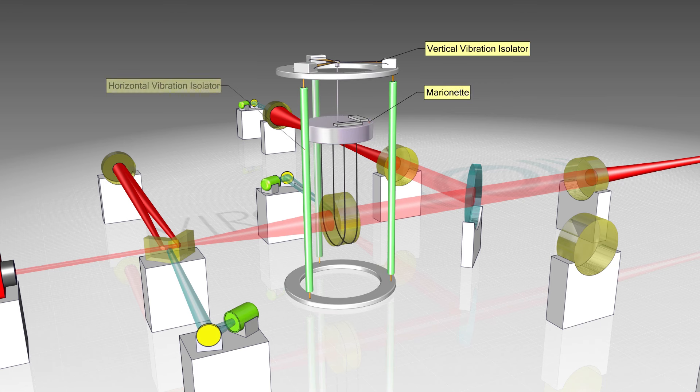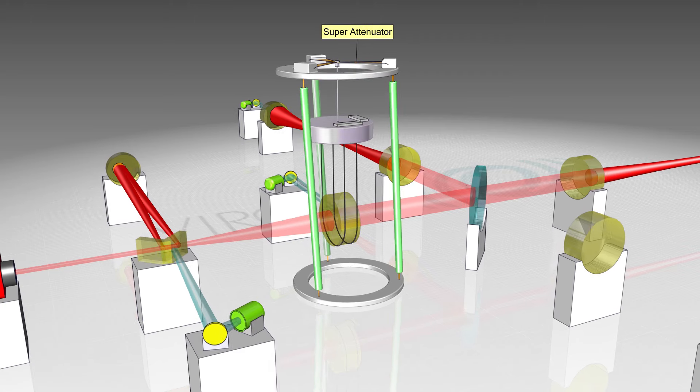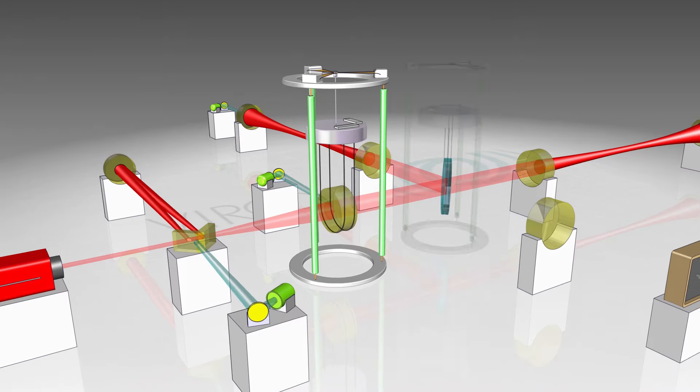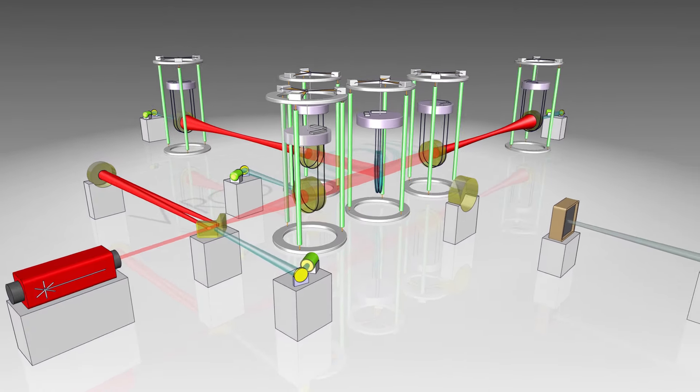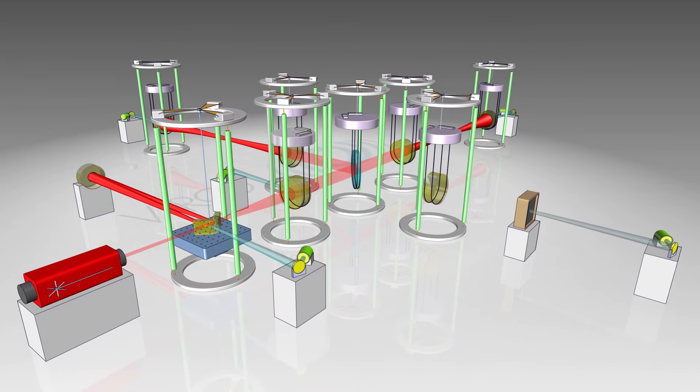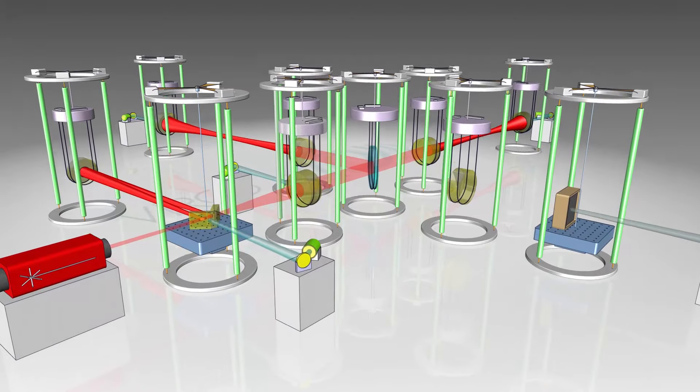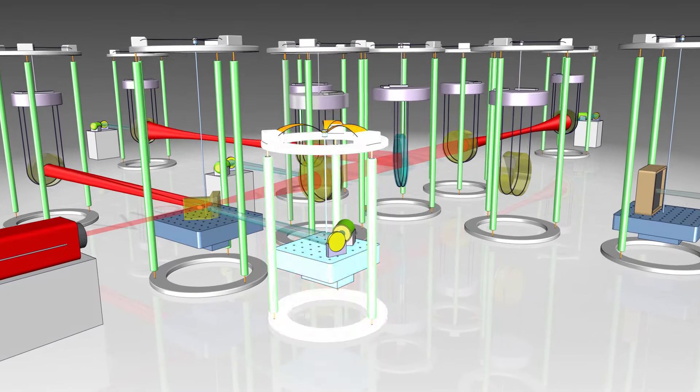Therefore, all components are mounted on horizontal and vertical vibration attenuators, the best in the world. While the ground is trembling, the mirrors and beams feel nothing of it, thanks to the super attenuators.